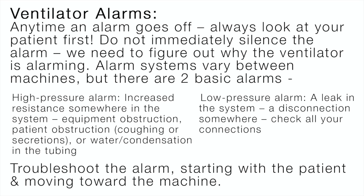Ventilator alarms: anytime an alarm goes off, always look at your patient first. Do not immediately silence the alarm — we need to figure out why the ventilator is alarming. Alarm systems vary between machines, but there are two basic alarms. The high pressure alarm indicates increased resistance somewhere in the system: equipment obstruction, patient obstruction, coughing or secretions, or water condensation in the tubing. The low pressure alarm indicates a leak in the system or a disconnection, so check all connections. Troubleshoot the alarm starting with the patient and moving toward the machine.